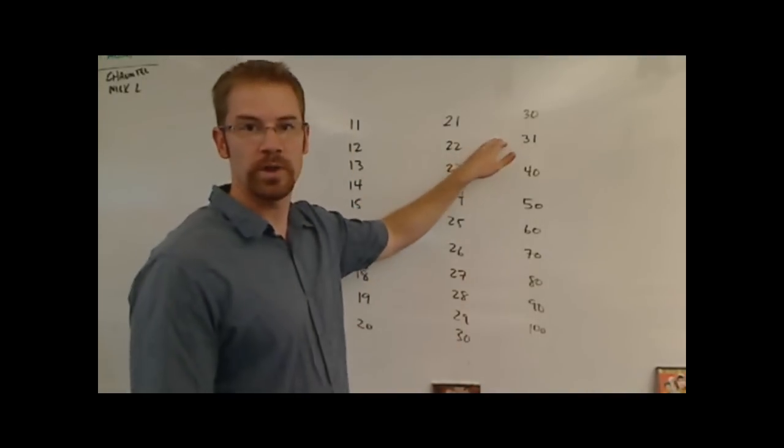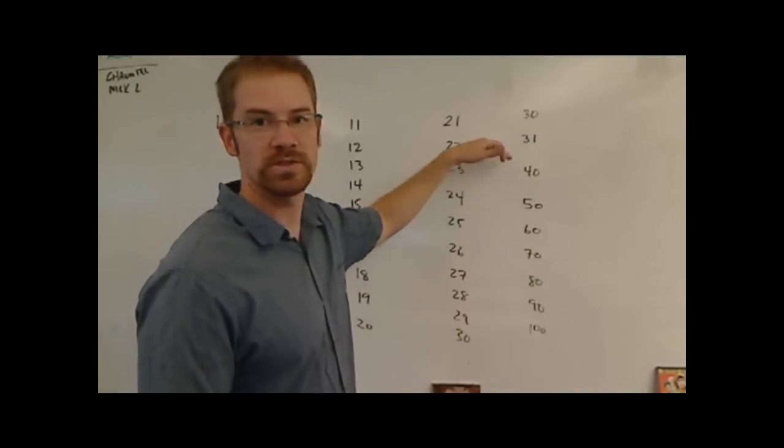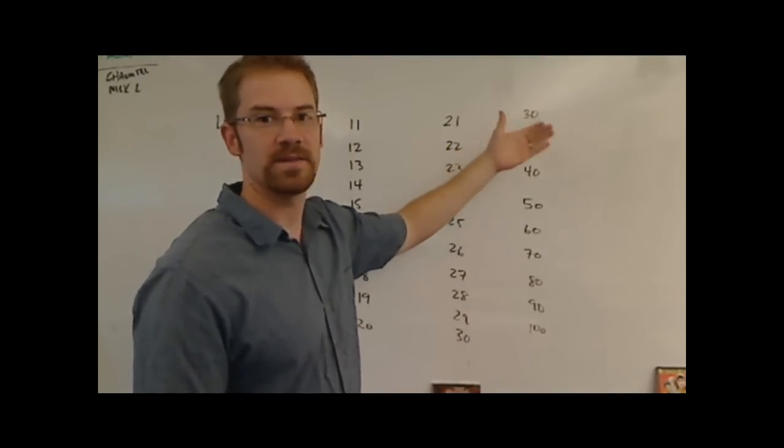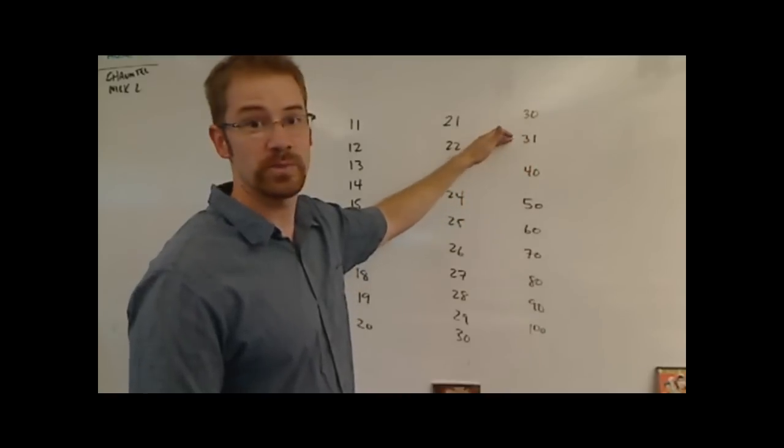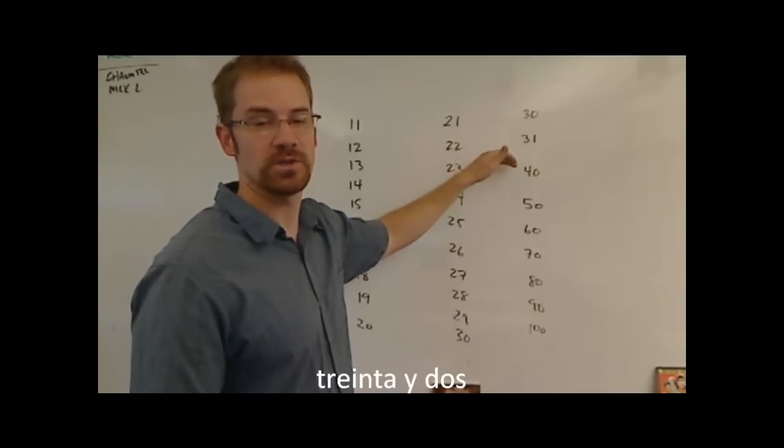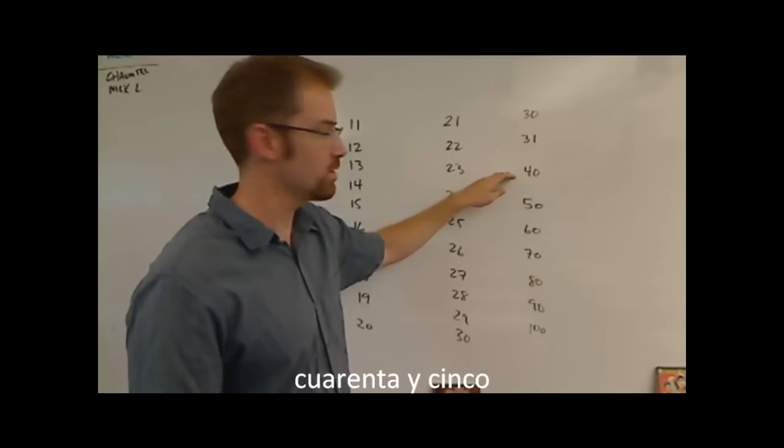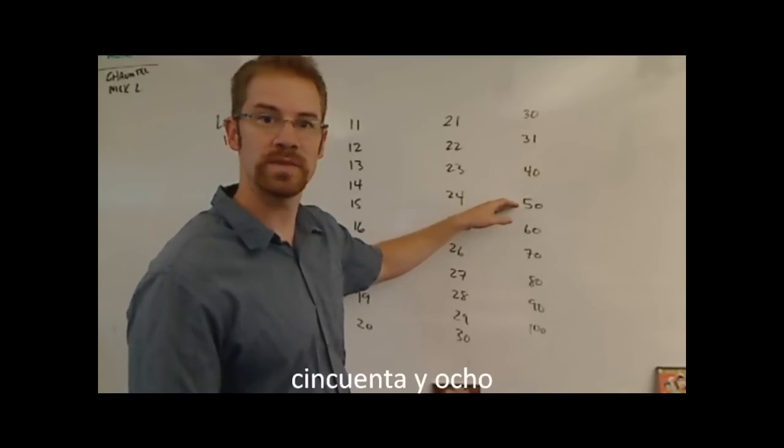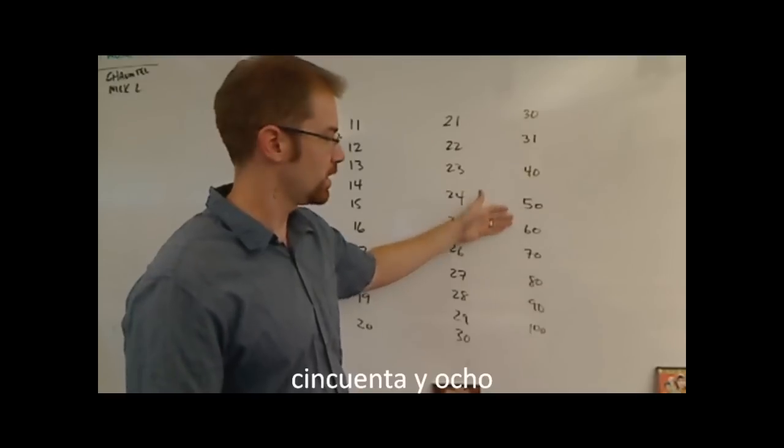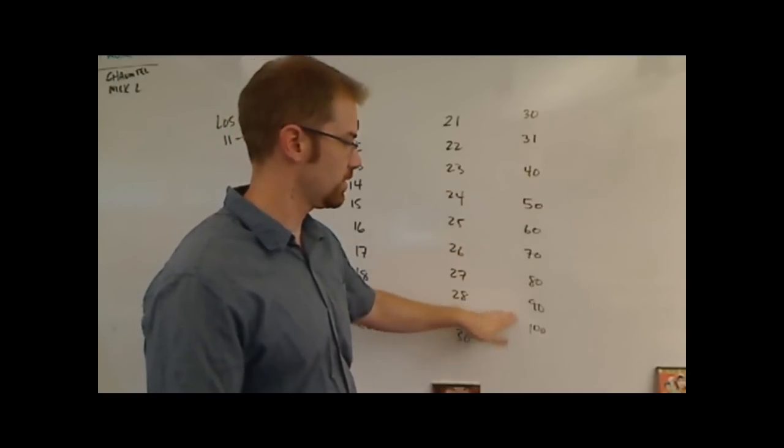The reason I stopped at 31 is because past 31 you just say 30 and then the number. For example, 32 would be 30 y 2, 45 would be 40 y 5, 58 would be 50 y 8, and you get the idea. It's the same all the way through 100.